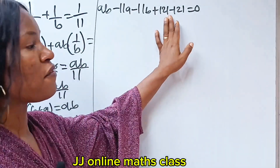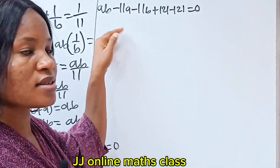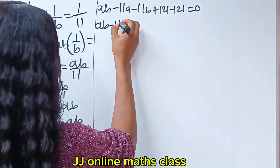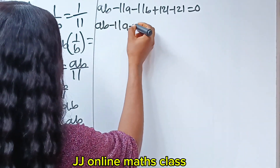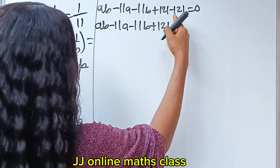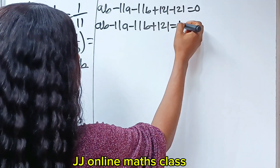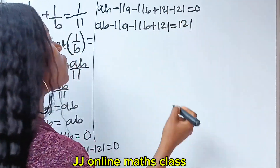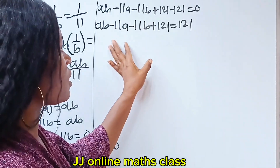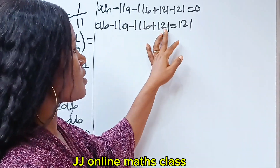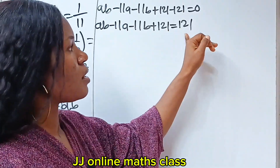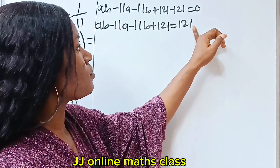I did this so that I can easily factorize this. So I now have AB minus 11A minus 11B plus 121, and then minus 121 crosses to become 121. I did this because I need to factorize this and get two factors — that's when I equate them and get the result.